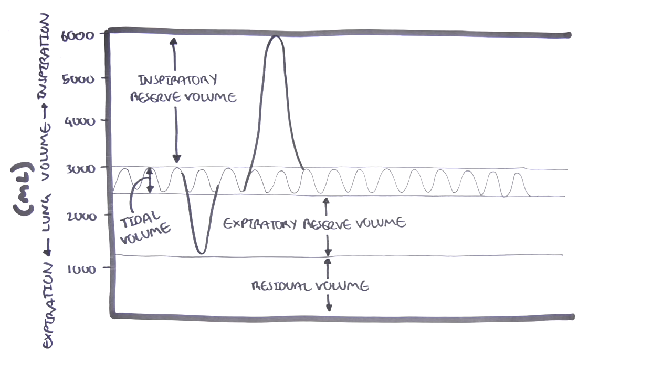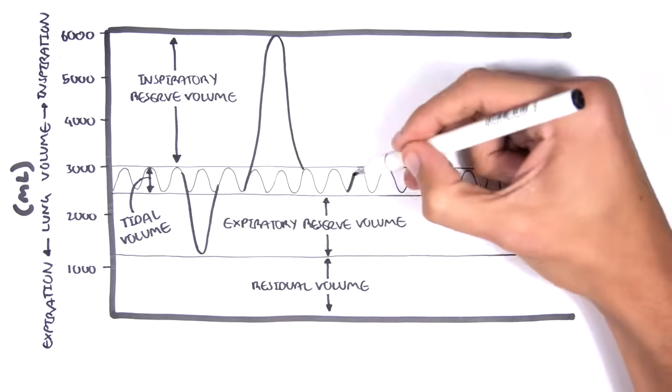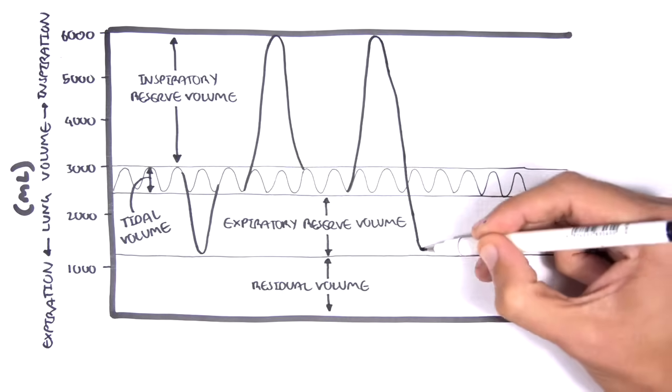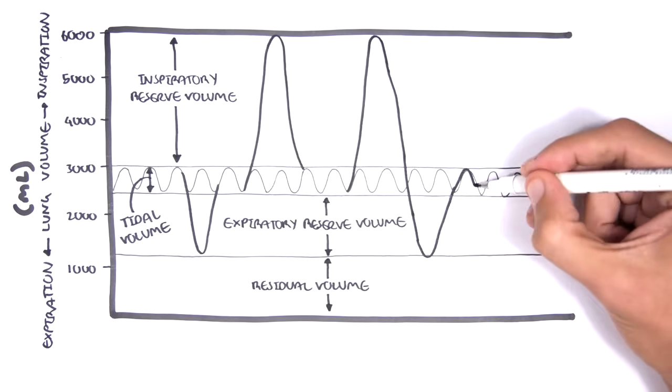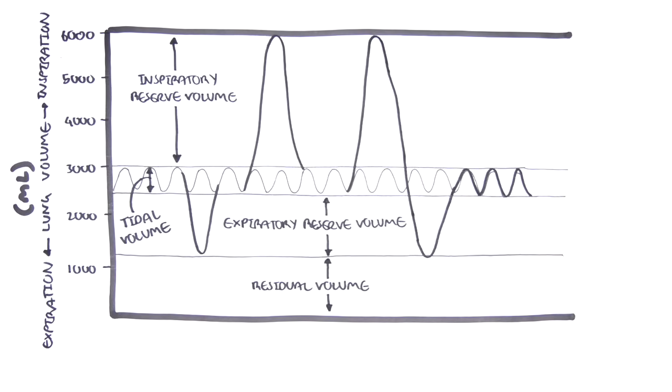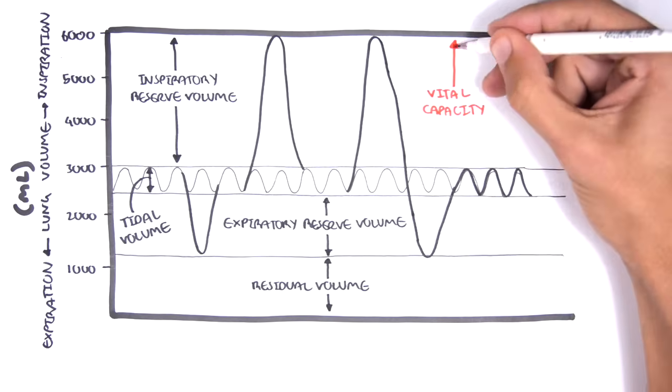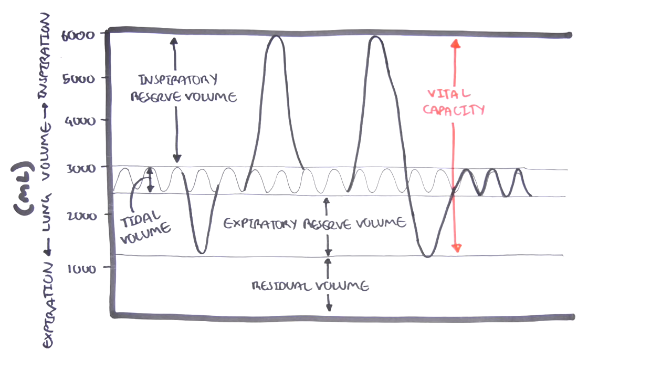The vital lung capacity refers to the maximum amount of air expired from a fully inflated lung, which means that it's essentially the tidal volume, plus the inspiratory reserve volume, plus the expiratory reserve volume. These three components will give you the vital lung capacity.